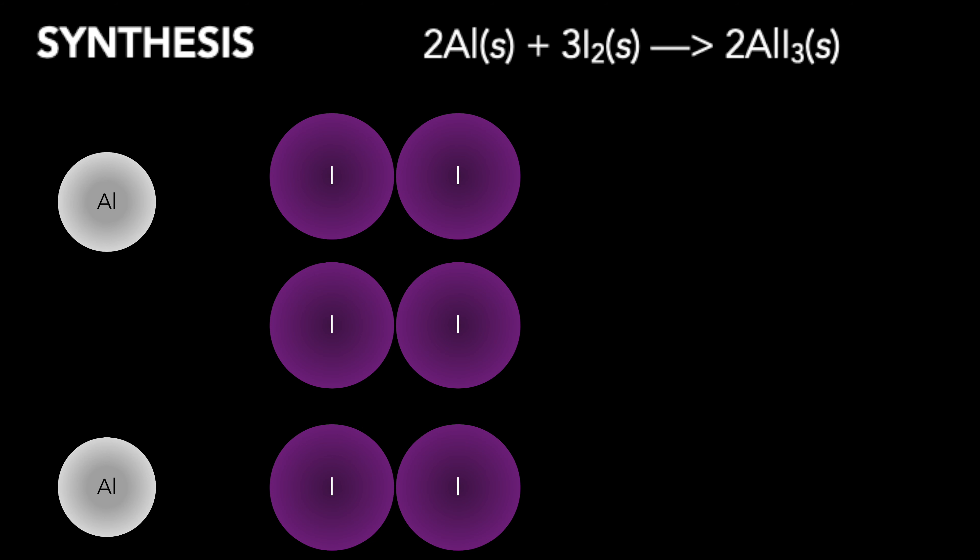The aluminum atoms will combine stoichiometrically with the iodine particles in the same fashion as in the simple diagram.